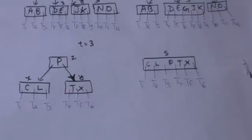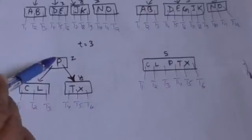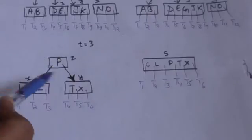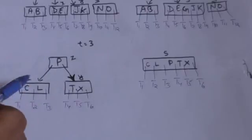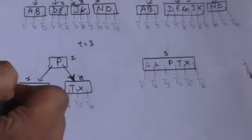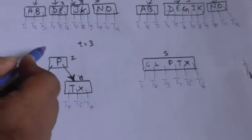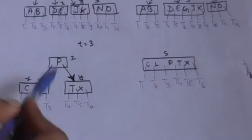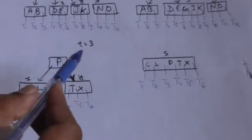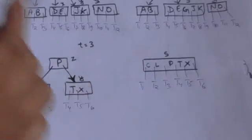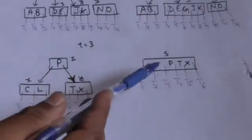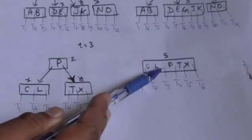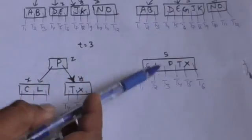Now consider this special case. Suppose there is a B-tree of minimum degree 3, so the minimum number of keys each node can have is 2. Node z is the root of this B-tree and it has only one key, that is P. Nodes x and y are children of node z; both have only two keys. Node x is at the left of key P and node y is at the right of key P. Now we have to merge these two nodes x and y. They will be merged into a single node s, and key P will move to this node s at the mid position.